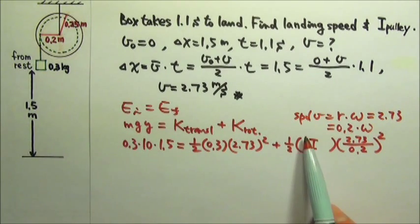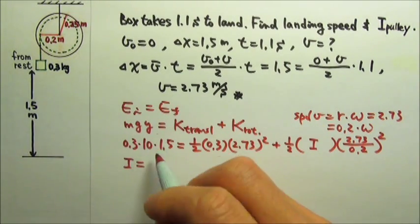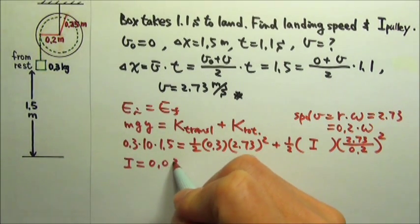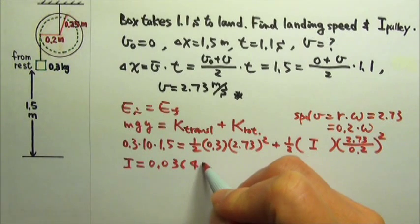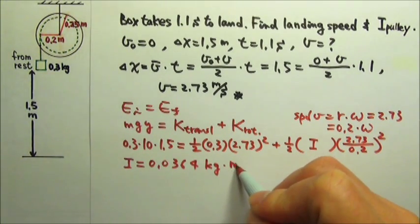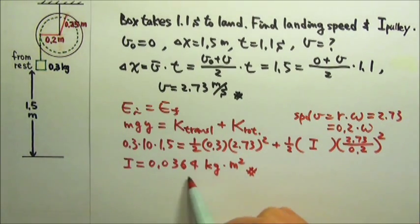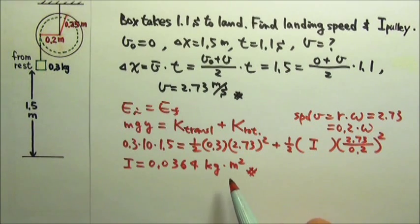We have one equation with one unknown, so we can solve for I. And we should be able to find I to be 0.0364, and that's the standard unit, kilograms times meters squared. And of course, this is exactly the same answer as the one we found in the last lesson.